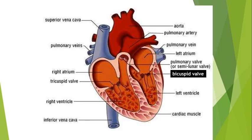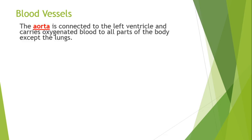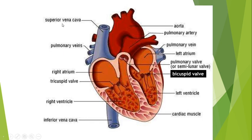The first thing to clarify is what blood vessels we're dealing with. We have the aorta — think of it as the main artery in the body, the main blood vessel taking blood away from the heart and delivering it to body cells. It connects to the left ventricle and carries oxygenated blood to every part of the body except the lungs. The vena cava is connected to the right atrium and brings deoxygenated blood back from the tissues. On diagrams it's usually labeled as two: a superior vena cava and an inferior vena cava.